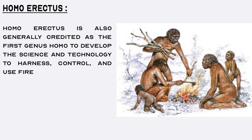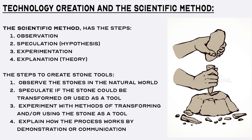It is important to emphasize that the development and use of tools and technology is evidence of science. Science consists of three parts: a method to acquire knowledge, the body of knowledge acquired, and a means to express it. In order for archaic humans to develop stone tools, they would have to observe stones in the natural world, speculate that a stone could be transformed or used as a tool, experiment with different methods of transforming or using it, and, if successful, explain how the process works to another individual by demonstration or communication so that the process could be replicated.